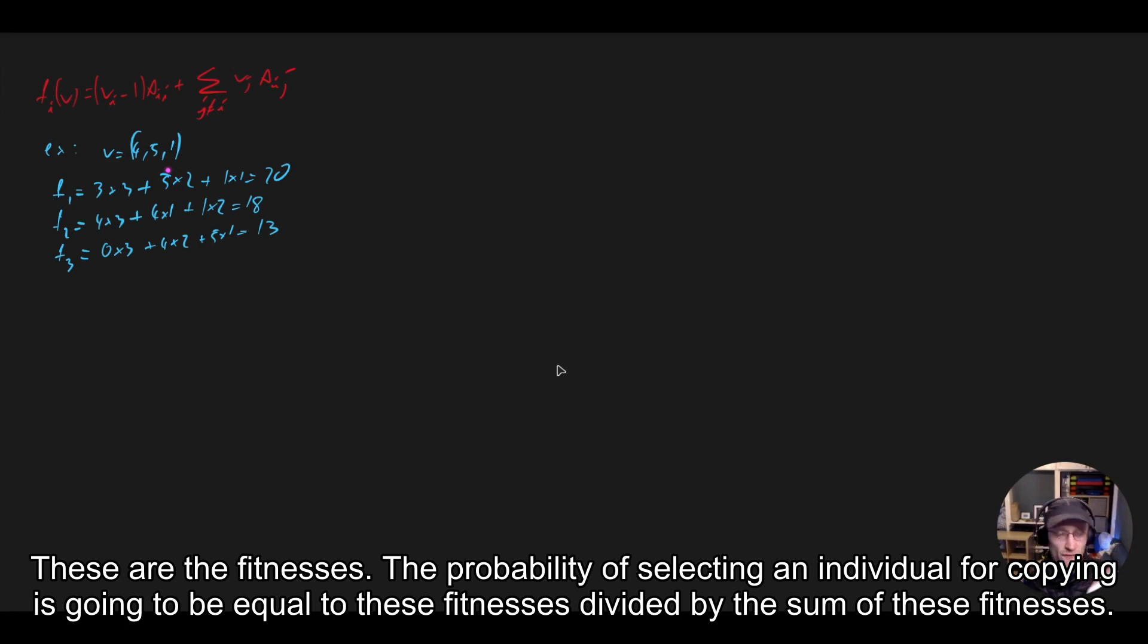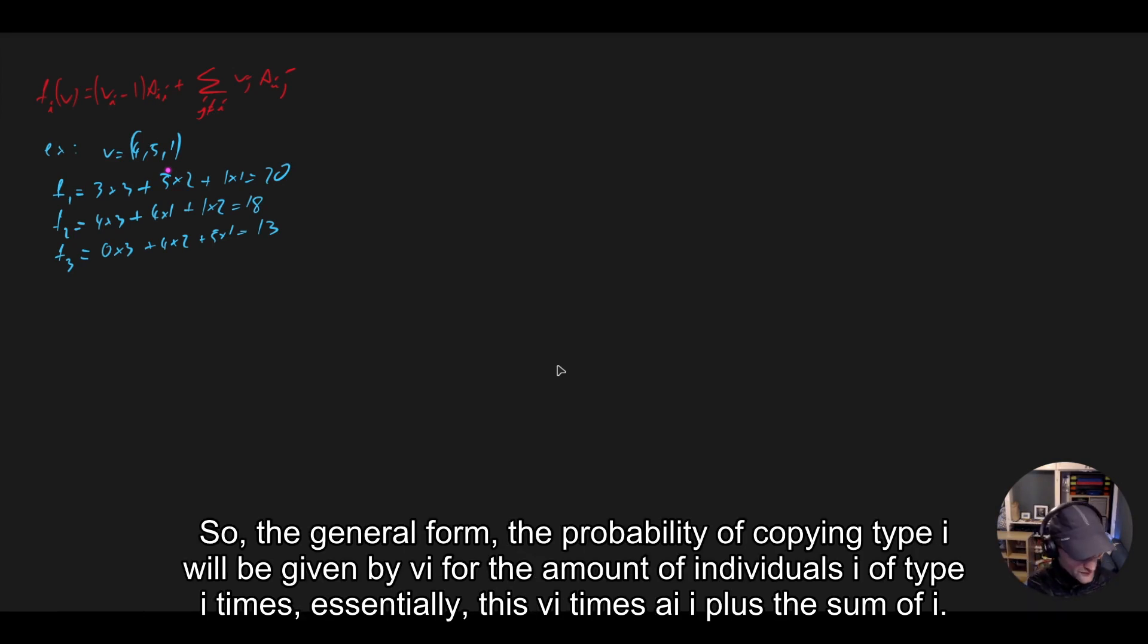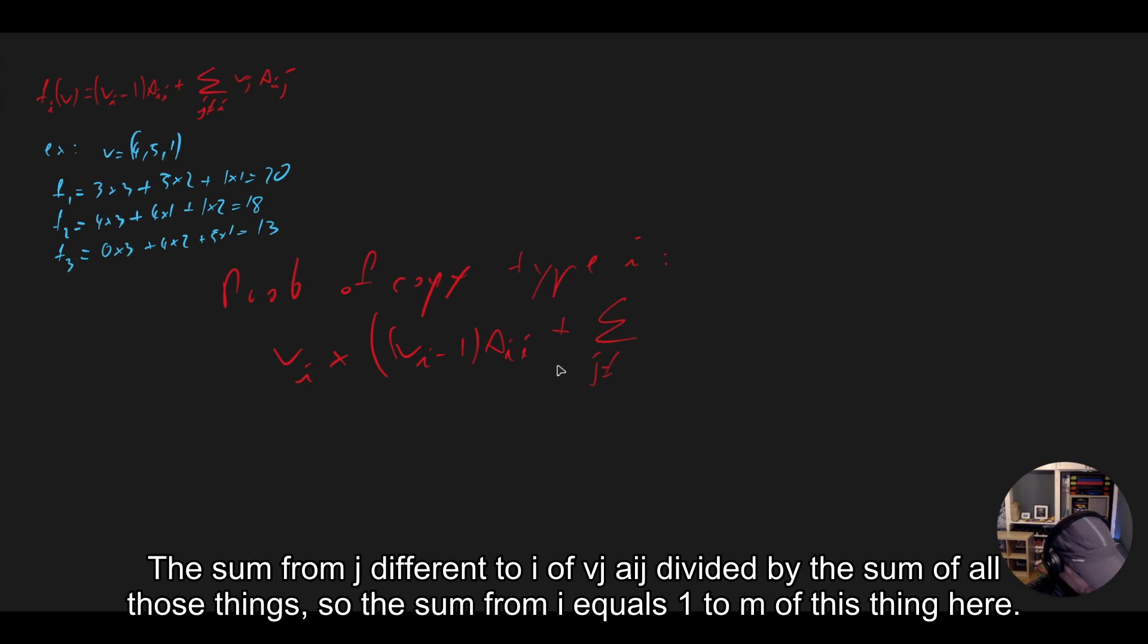The probability of selecting an individual for copying is going to be equal to these fitnesses divided by the sum of these fitnesses. So the general form, the probability of copying type i will be given by vi, so the amount of individuals of type i times essentially this vi times aii plus the sum from j different to i of vj aij divided by the sum of all those things.